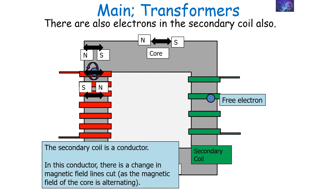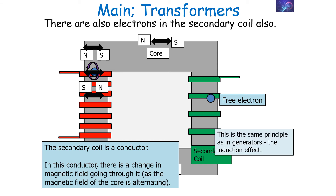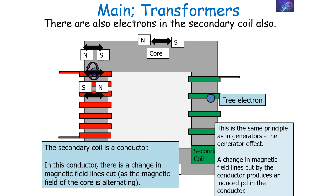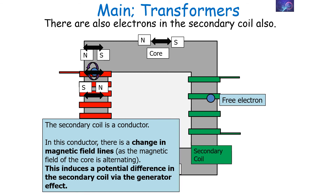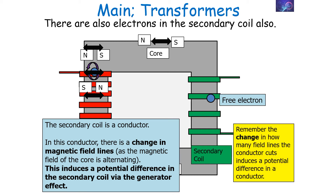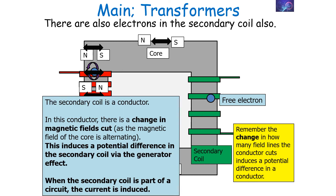Because the secondary coil is a conductor — just a wire — in this conductor there's a change in the number of magnetic field lines cut, not because the conductor is moving, but rather because the magnetic field produced by the iron core and the primary coil is alternating backwards and forwards. This generates a potential difference in the secondary coil via the generator effect — the induction effect. A change in magnetic field lines cut by a conductor produces an induced potential difference. When the secondary coil is part of a complete circuit, a current is induced.